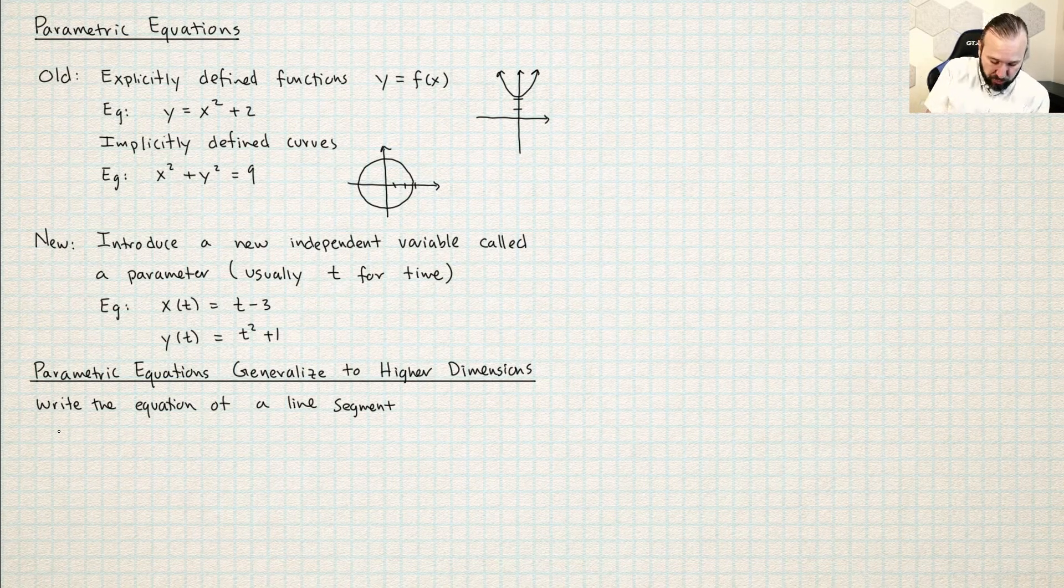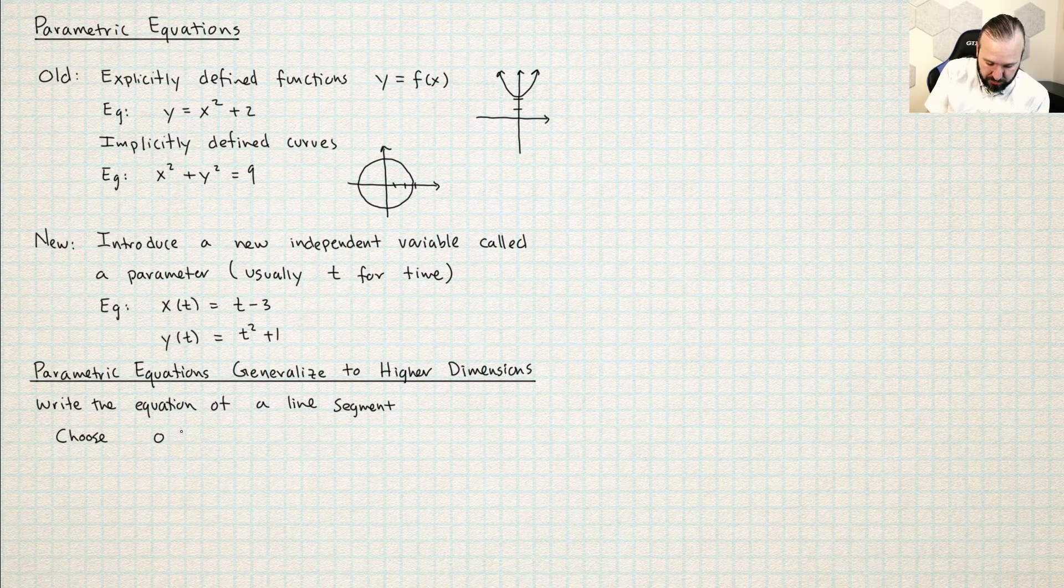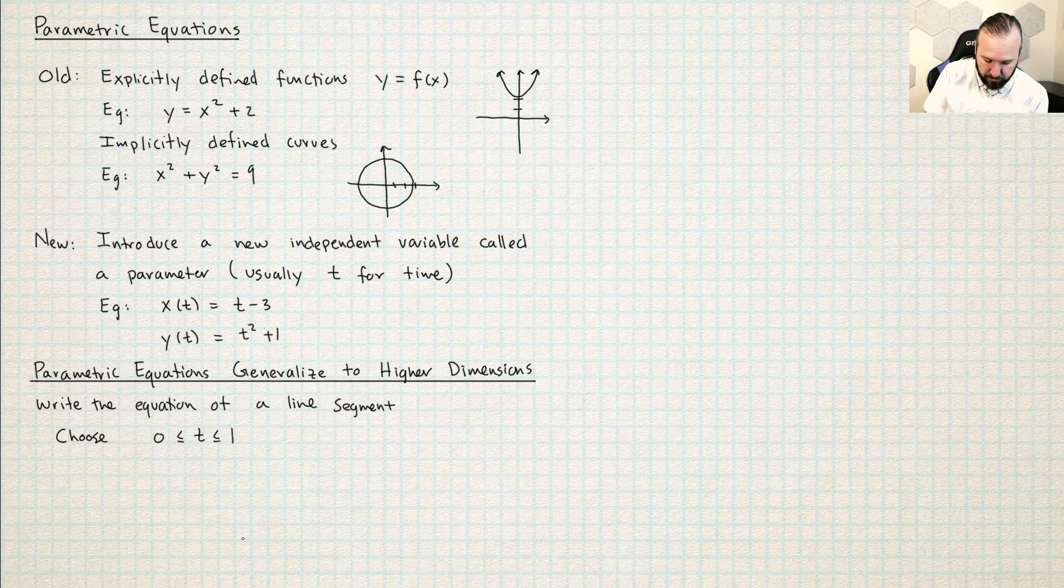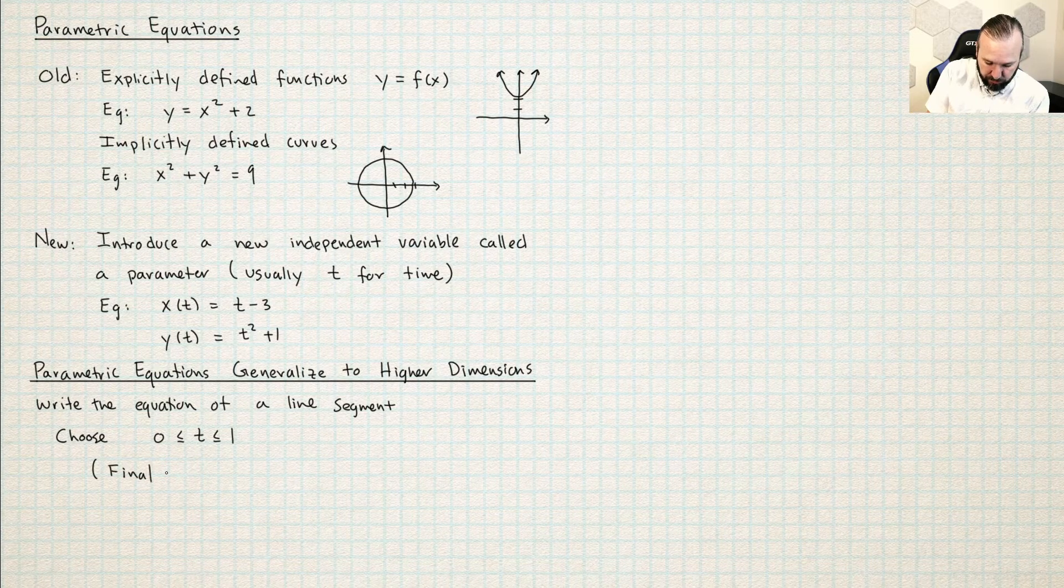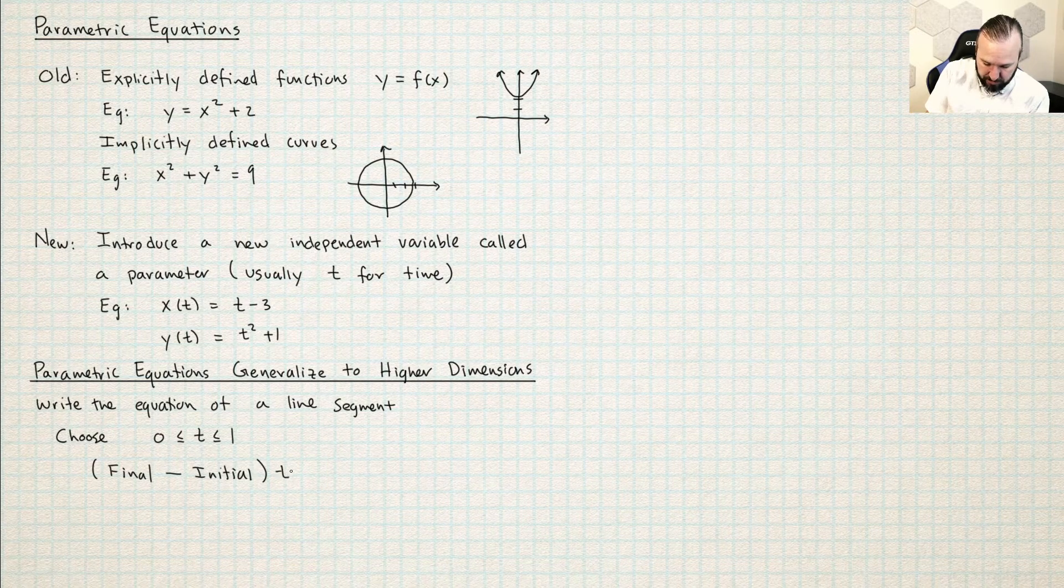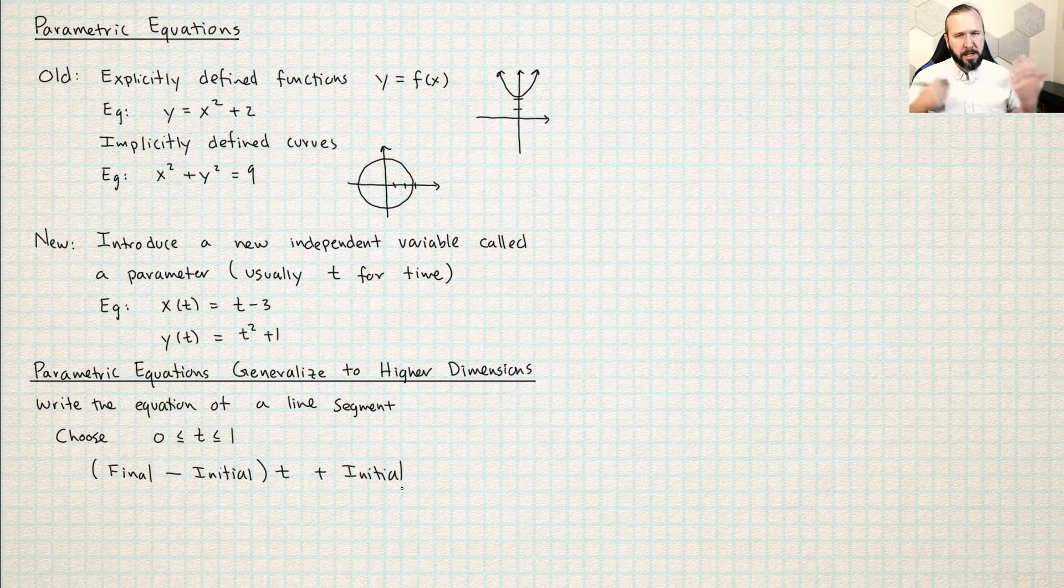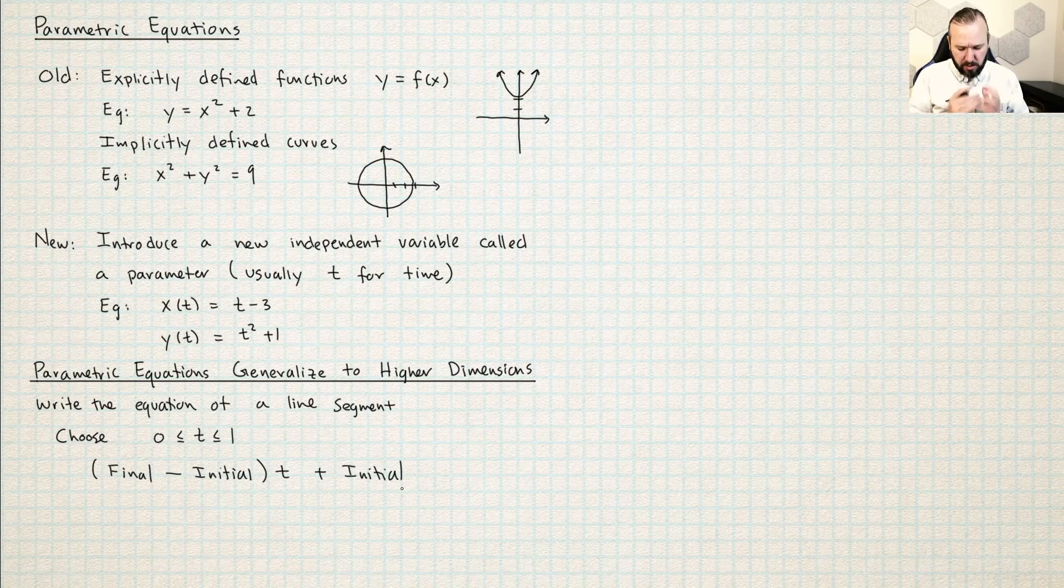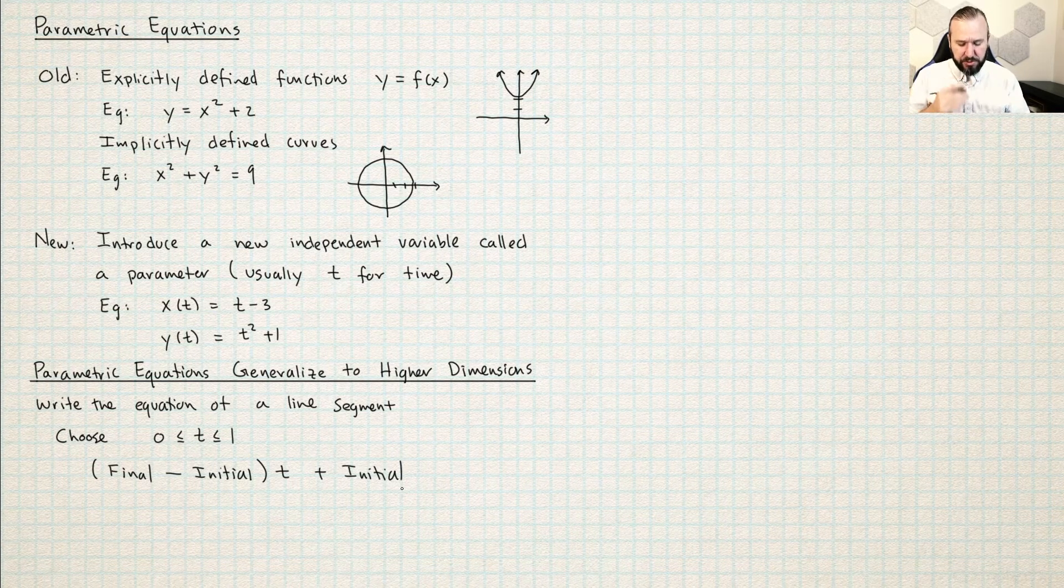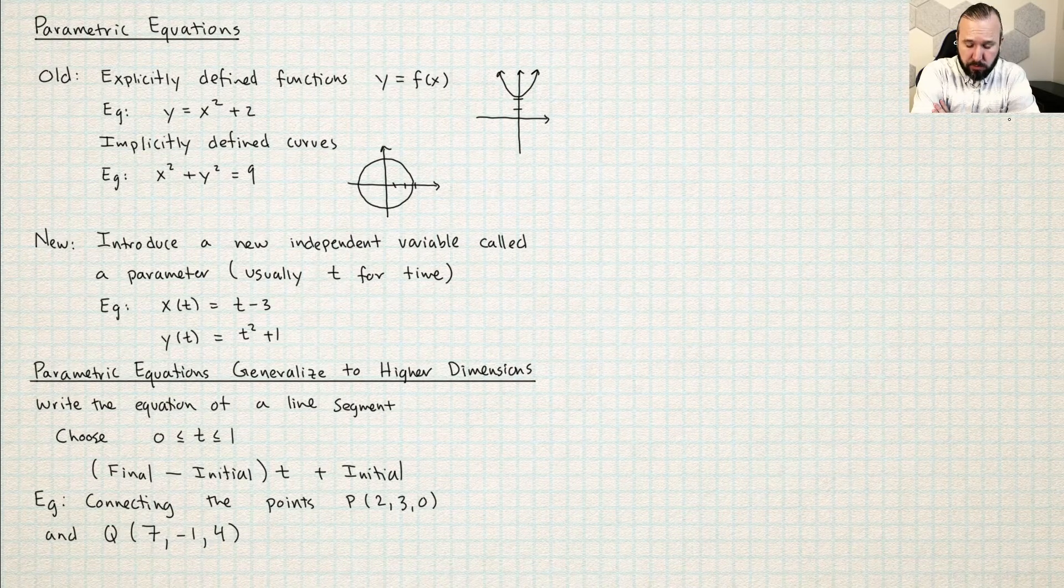So I want to introduce this idea. We're always just going to choose t in between 0 and 1. And then our method for doing this, just kind of loosely speaking, is I'm going to do final minus initial times t plus the initial point. So in calculus three, there's a lot of writing equations of lines. So I want you to get used to this formula: final minus initial times t plus initial. We use it a lot. Now would be a good time to pause the video and catch up on the notes if you're taking notes.